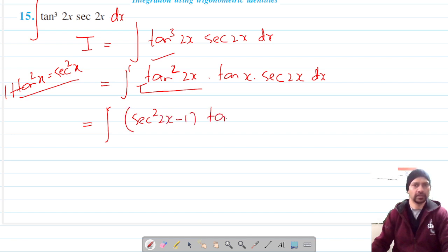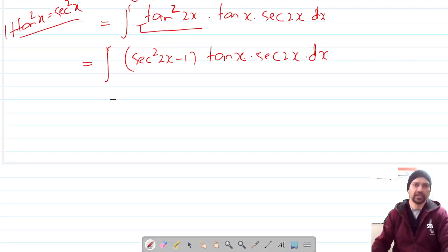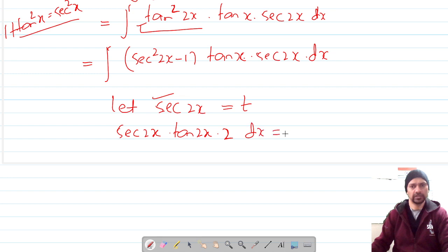And our substitute should be sec(2x) that's equal to t and differentiation of sec(2x) is sec(2x)·tan(2x) and for 2x it's 2·dx. It's equal to dt.